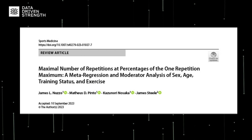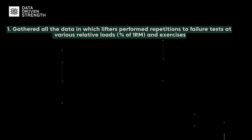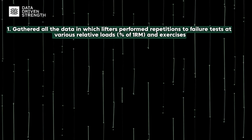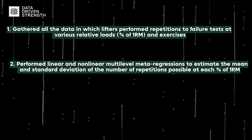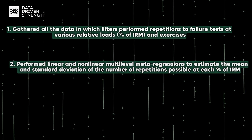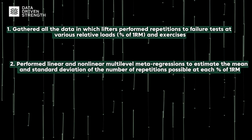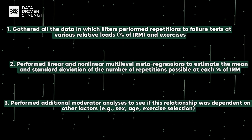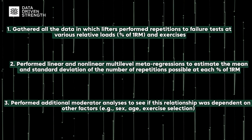Thankfully, a recent meta-regression by Nuzzo and colleagues sought to better investigate these relationships using data from over 7,000 lifters. The meta-regression did a few things: they gathered all data in which lifters performed repetitions-to-failure tests at various relative loads and exercises. Then they performed linear and non-linear multi-level meta-regressions to estimate the mean and standard deviation of the number of repetitions possible at each percentage of 1RM. Finally, they performed additional moderator analyses to see if this relationship was dependent on factors like sex, age, or exercise selection.